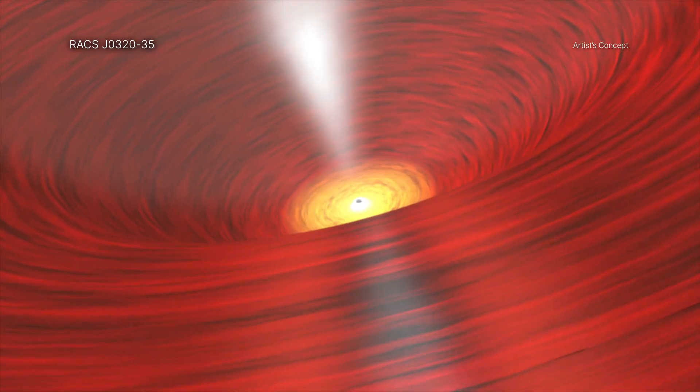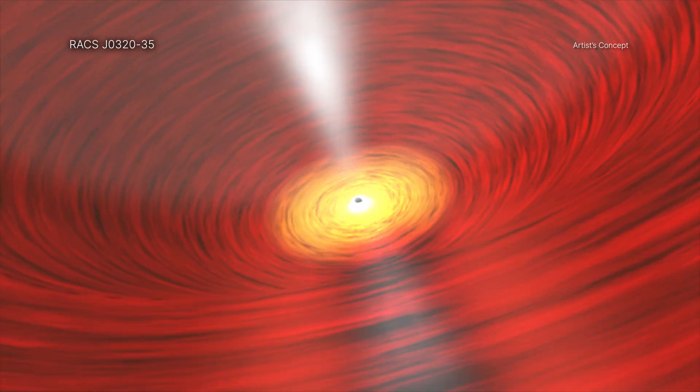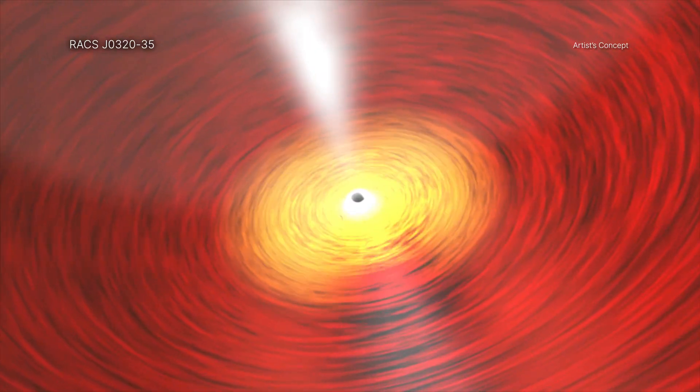Scientists think that black holes growing more slowly than the Eddington rate need to be born with masses of about 10,000 suns or more so they can reach a billion solar masses within a billion years after the Big Bang, like they have observed in RAGS J0320-35.